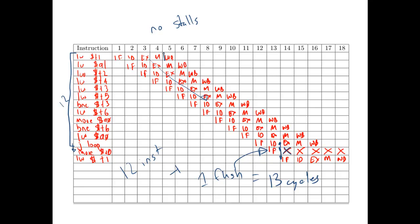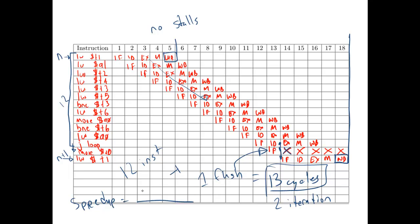Alternatively, we can look at the write-back stage of the first instruction of iteration N and the write-back of the first instruction of iteration N+1. Looking at the same stage for both instructions avoids double counting — counting the cycles gives us thirteen. So it takes thirteen cycles to do the work of two iterations in the original program. Our speedup is the time per iteration in the original code — that was ten cycles — divided by the time per iteration in the new code, which is thirteen over two cycles. Doing the arithmetic, the new code is 1.45 times faster.